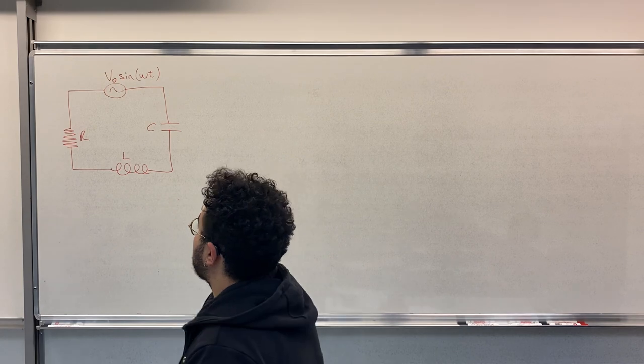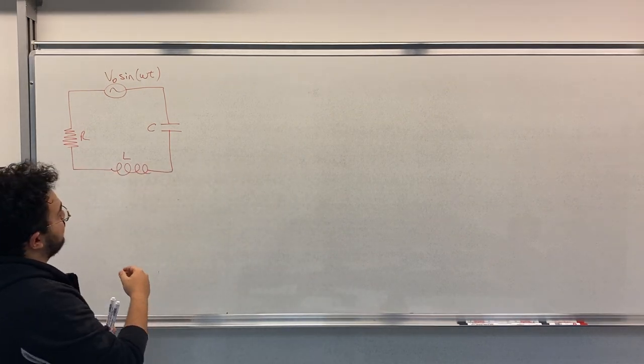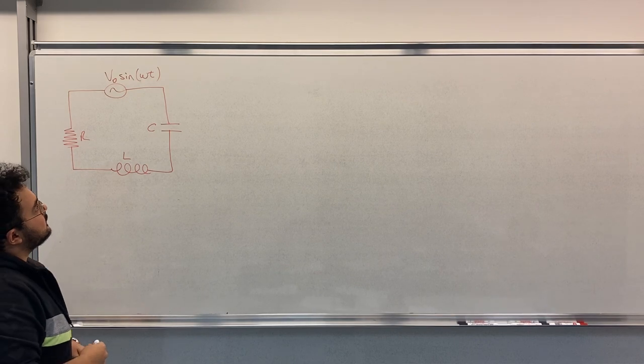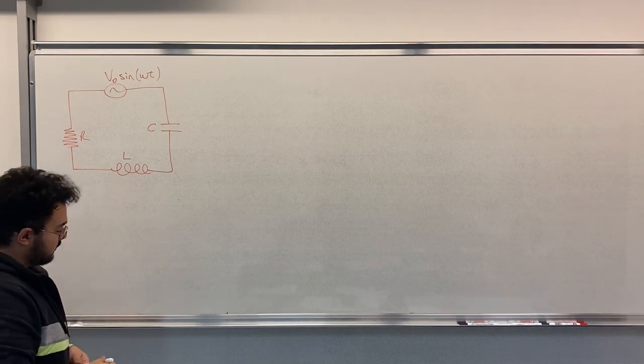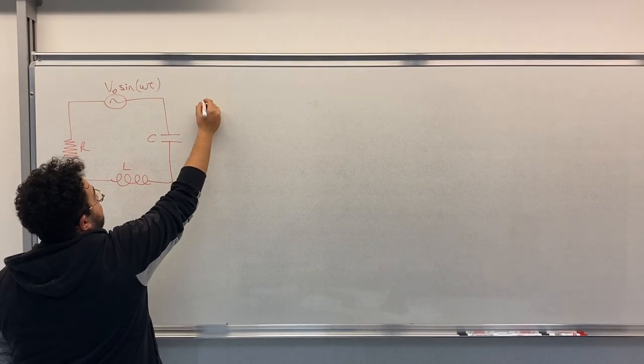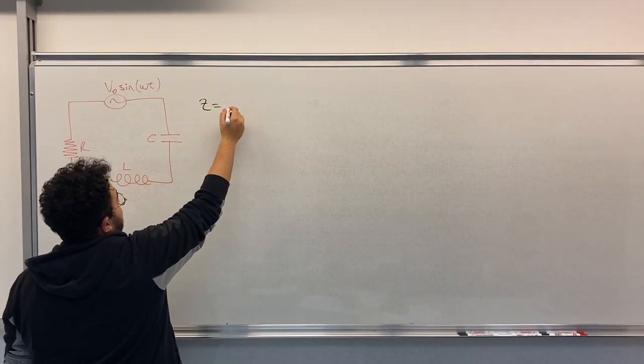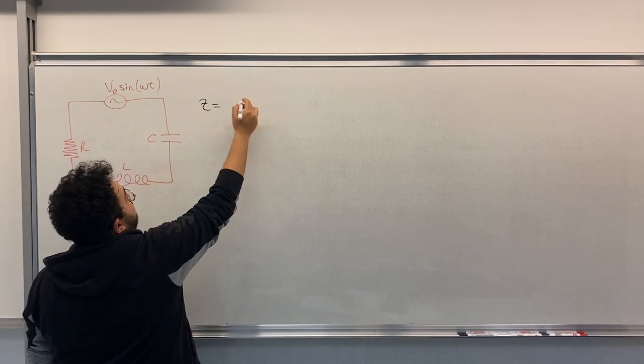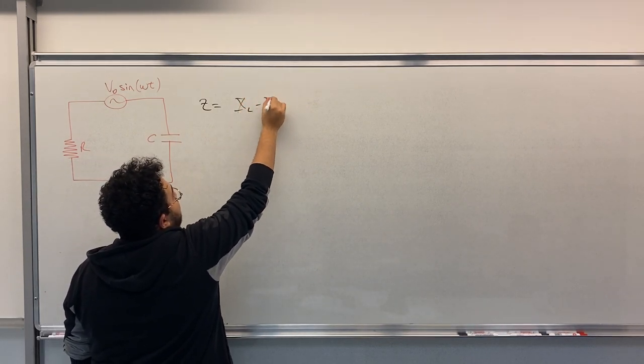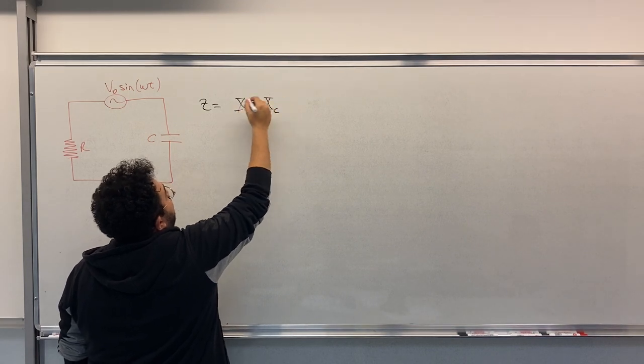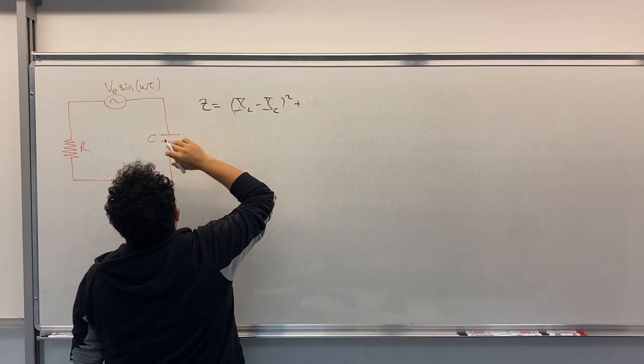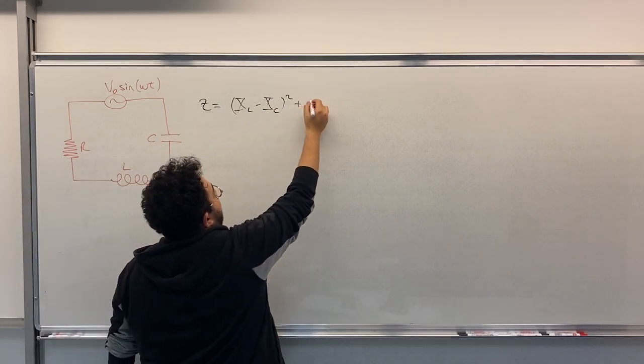So this is the question. I'm not bothering you with the values of the components. The first question is what is the impedance of the circuit? If you remember, the formula is that total impedance equals to square root of impedance of L minus C squared plus impedance of R squared.